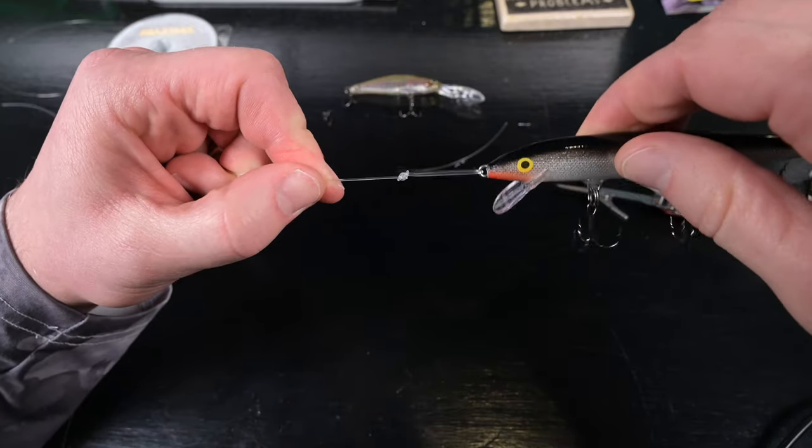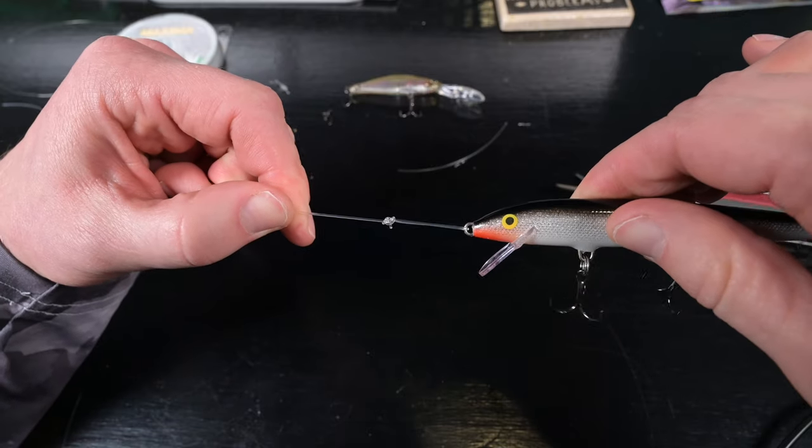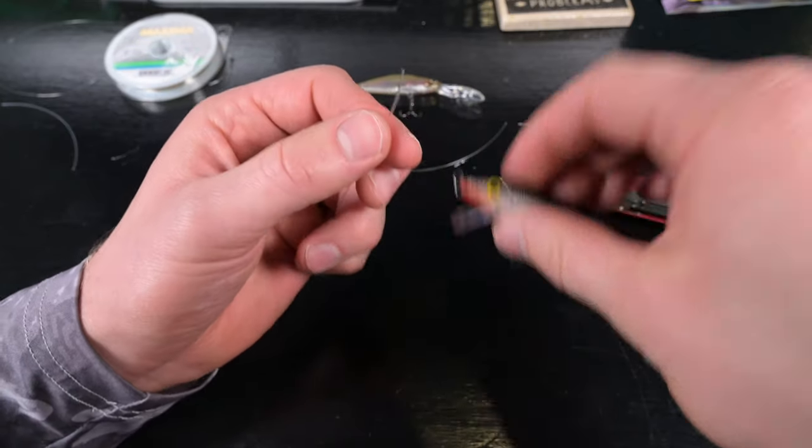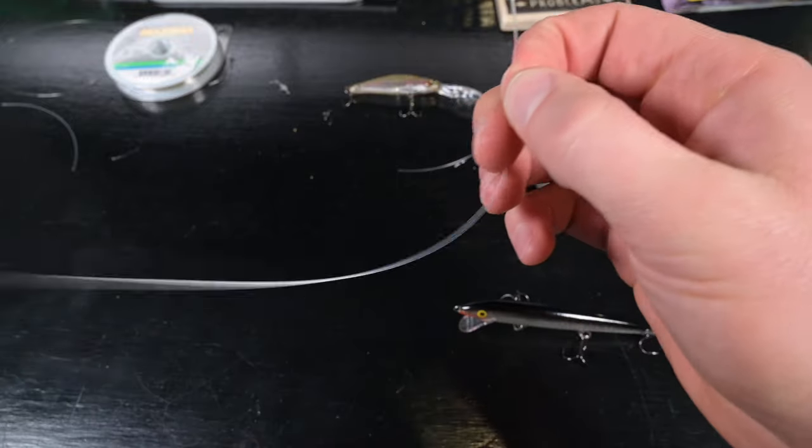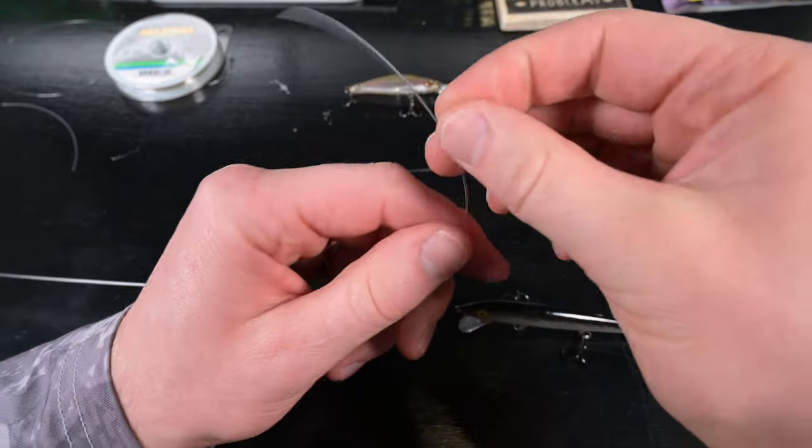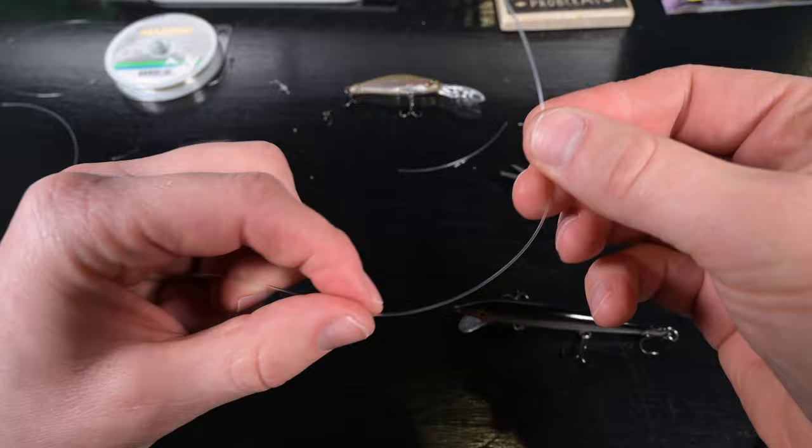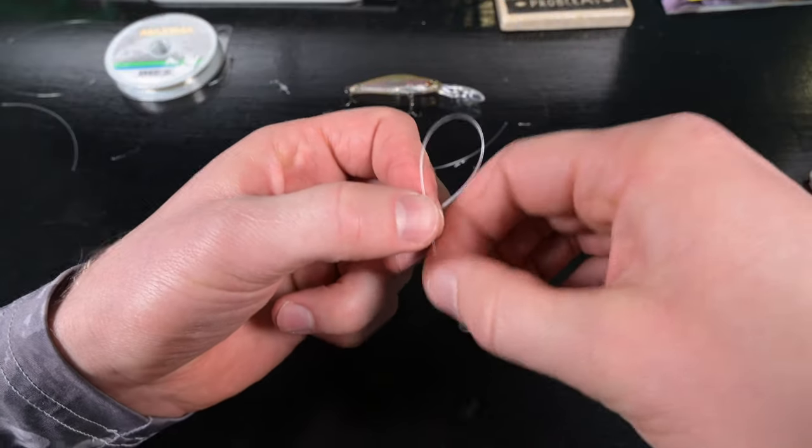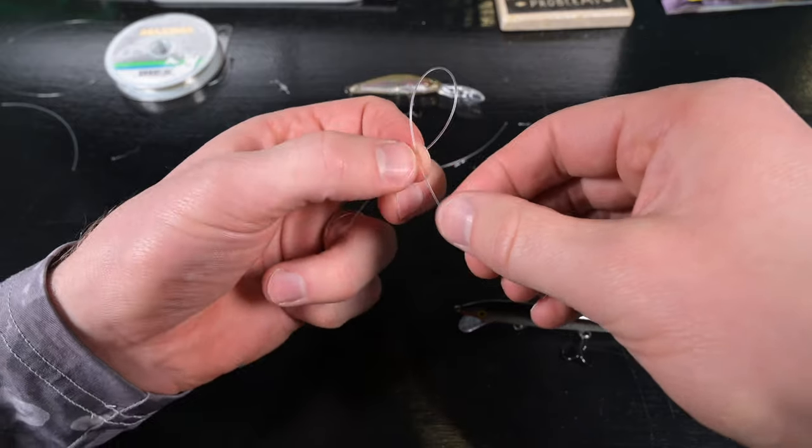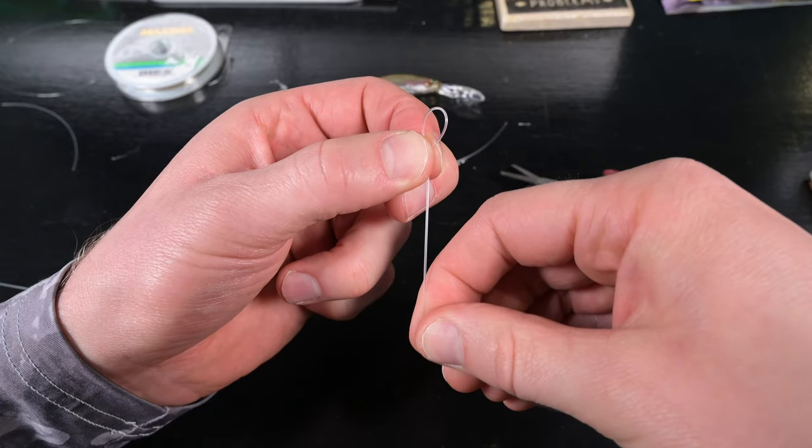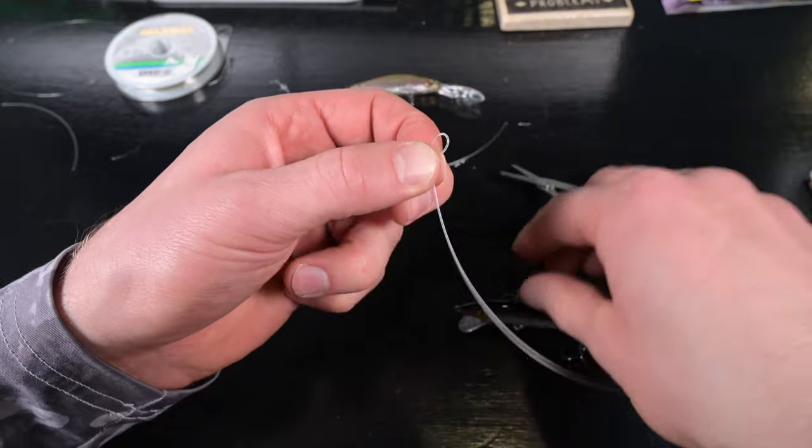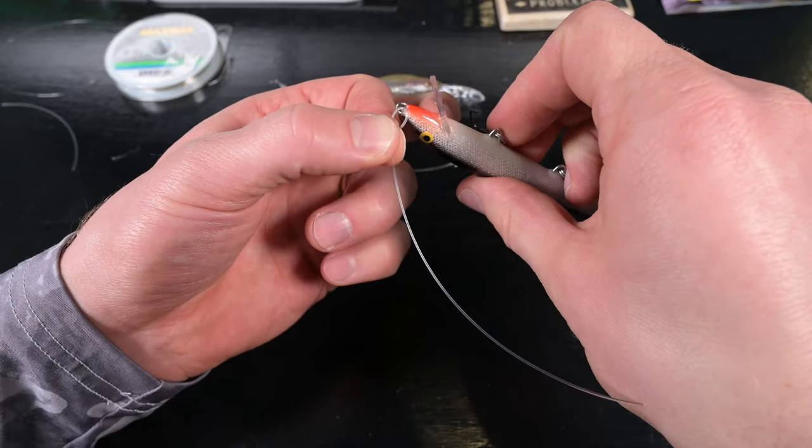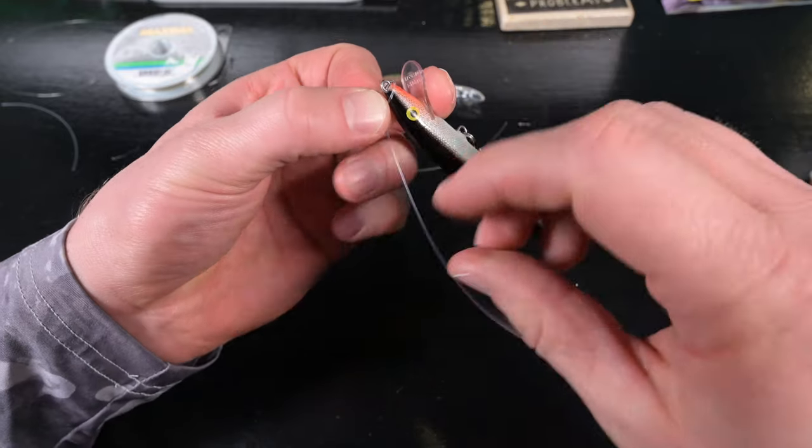For demonstration purposes, I made that loop bigger so it would be easier to see. Now let's make the loop smaller. I like the smallest loop possible so that the entire knot package looks small. The smaller you make the loop, the smaller the entire knot package will be.